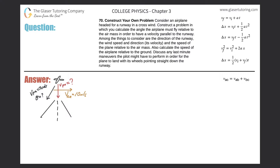Number 70: construct your own problem. Consider an airplane headed for a runway in a crosswind. Construct a problem in which you calculate the angle the airplane must fly relative to the air mass in order to have a velocity parallel to the runway. Among the things to consider are the direction of the runway, the wind speed and direction, and a whole bunch of other stuff. Also calculate the speed of the airplane relative to the ground.